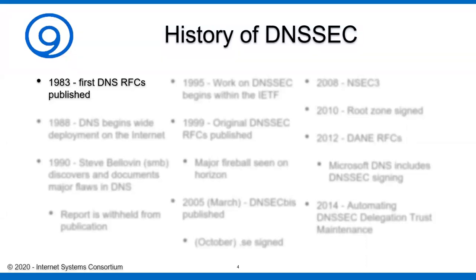The mass movement to DNS really began more along the lines of 1988. It was in its infancy between 1983 and 1988, but it really took off when everyone discovered that the host file, hosts.txt, really wasn't going to be a fitting way of managing this huge network.